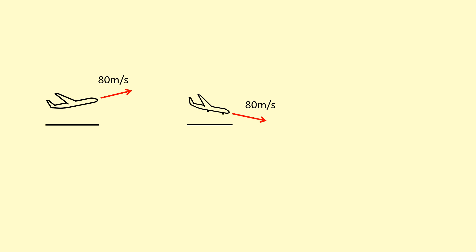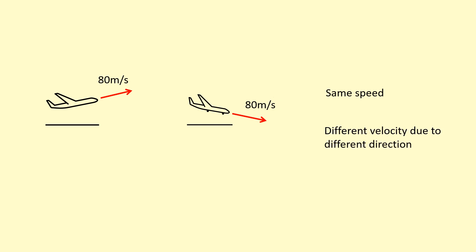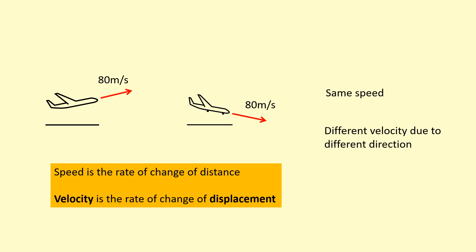We have two planes here; they're both flying at 80 meters per second, which means they have the same speed. However, they have different velocities because they're going in different directions. Velocity is a vector, so it includes direction as well. Speed is defined as the rate of change of distance, while velocity is defined as the rate of change of displacement.